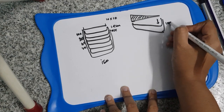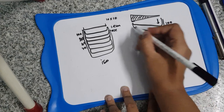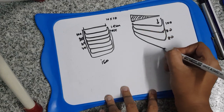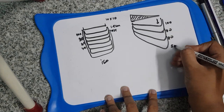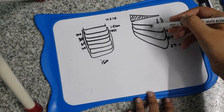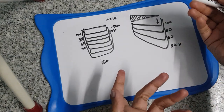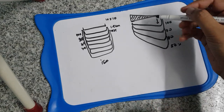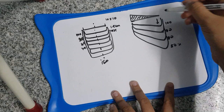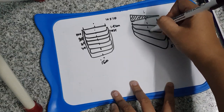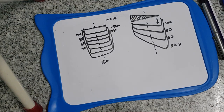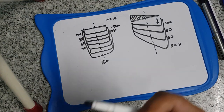So the 100% isodose curve will be tilted, then 90%, 80%, and so on. This is how the isodose curves appear when you apply the wedge. The central axis is the same as in the non-wedged case.